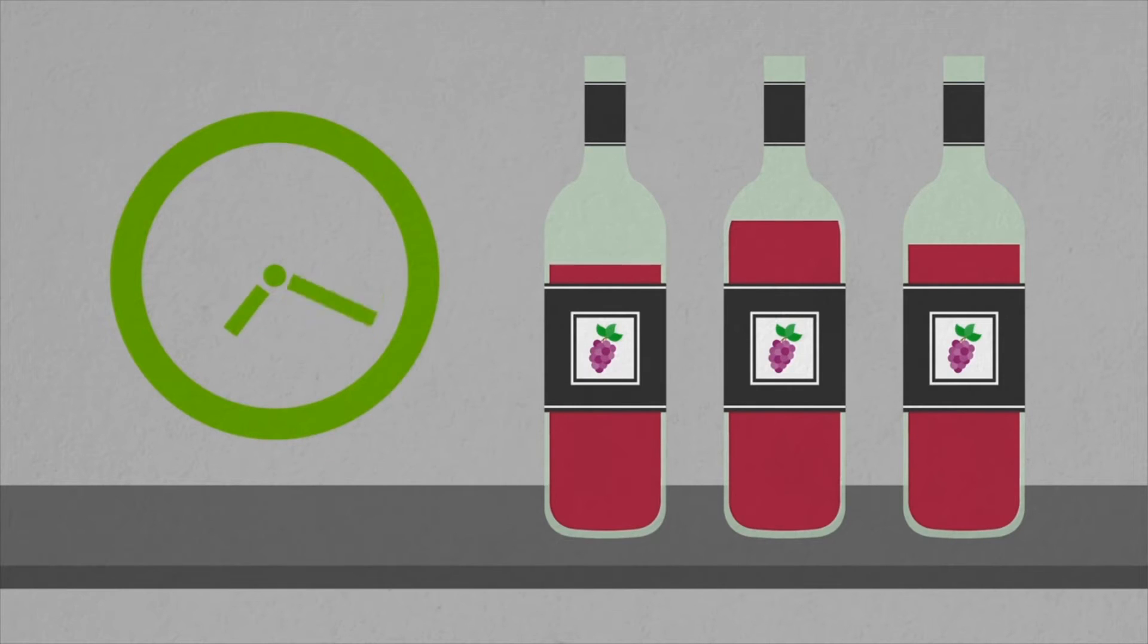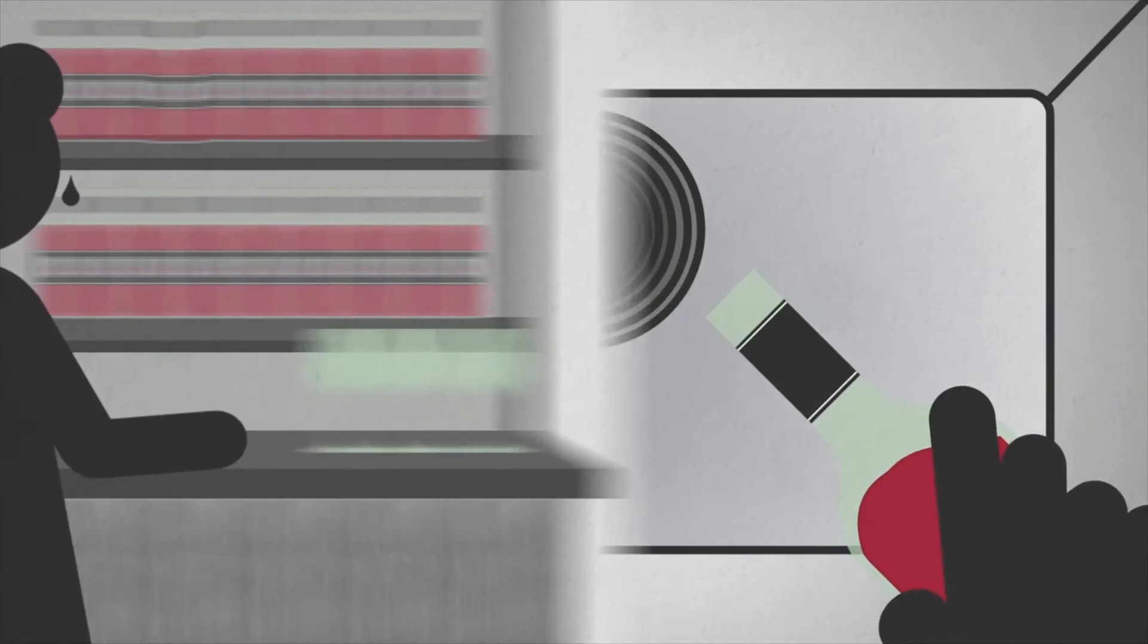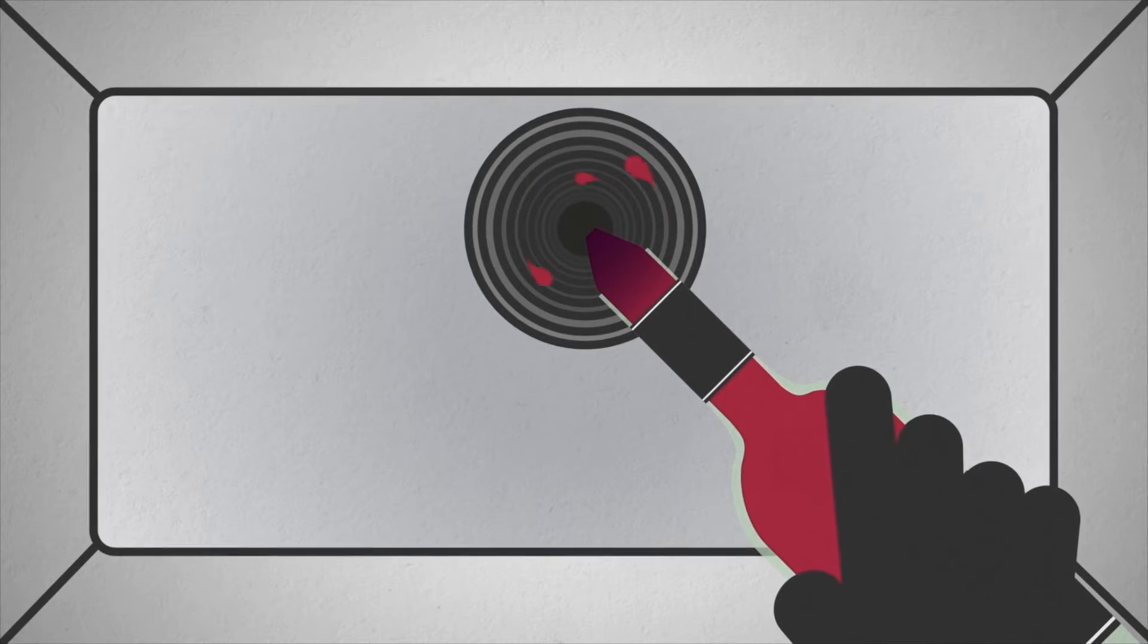But some wines won't get ordered with regularity. So if someone orders a glass of wine from a bottle that's been opened for a while, it won't taste like it should. Wine will quickly spoil and should be poured out. The restaurant can't recoup the money spent on a bottle.